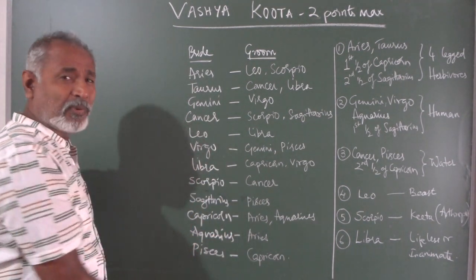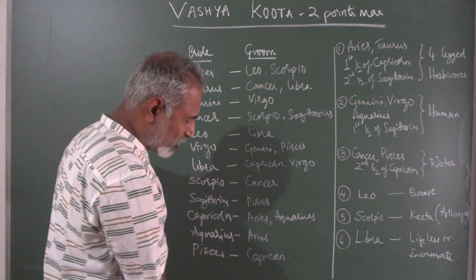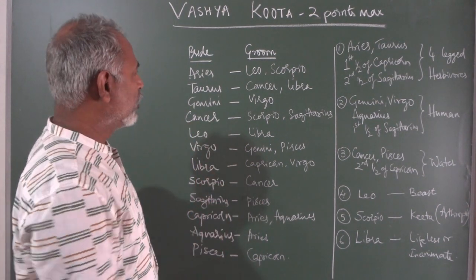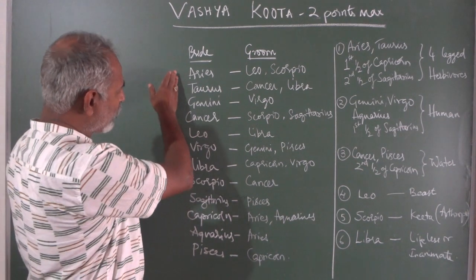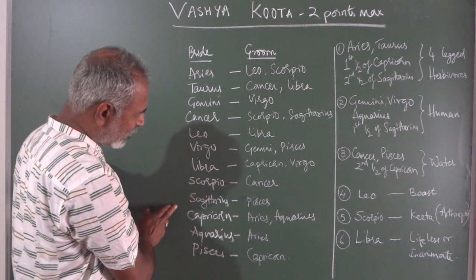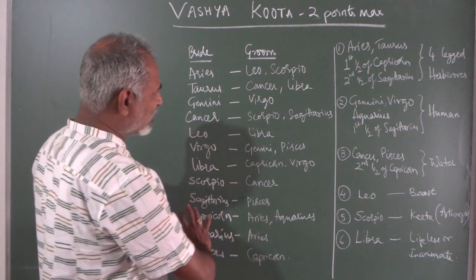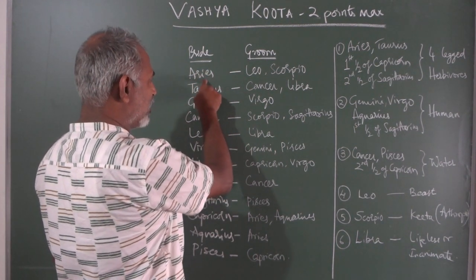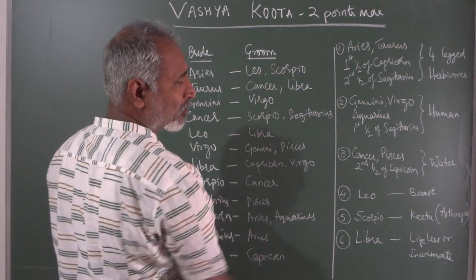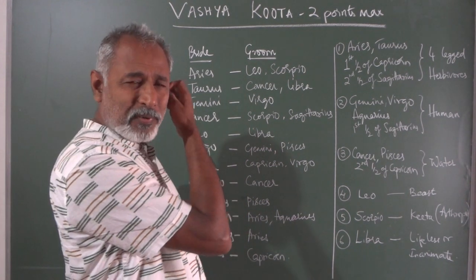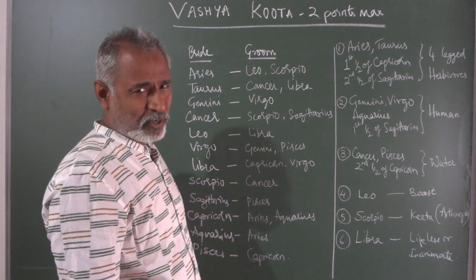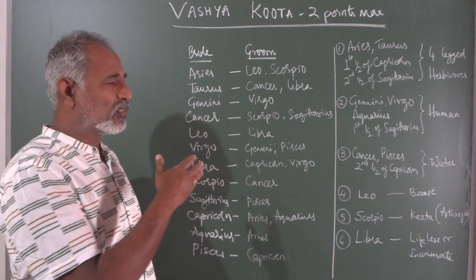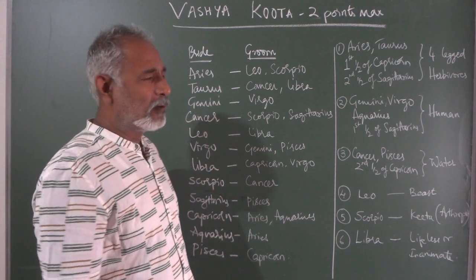As per the traditional table, you will get two points if this matches. It is very simple, but it is complicated when we go into the real analysis of why this is done. For the bride, all twelve rashis are listed: Aries, Taurus, Gemini, Cancer, Leo, Virgo, Libra, Scorpio, Sagittarius, Capricorn, Aquarius, and Pisces. There is a higher level classification of Vashya Kuta which gives one point in between, but as per the traditional table it is either zero or two.